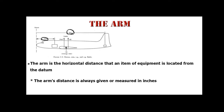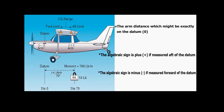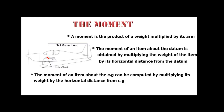The arm is the horizontal distance that an item of equipment is located from the datum. The arm's distance is always given or measured in inches. The arm distance which might be exactly on the datum is zero. The algebraic sign is plus if measured aft of the datum, and minus if measured forward of the datum.